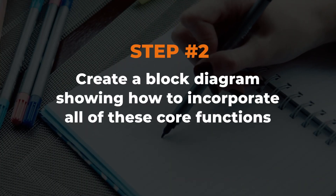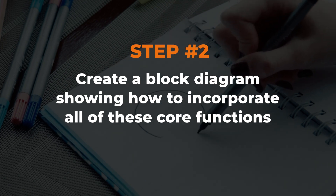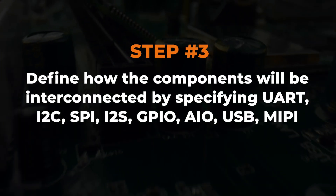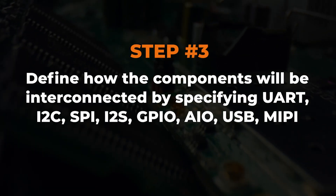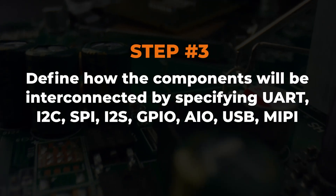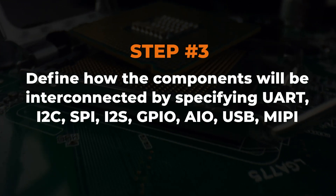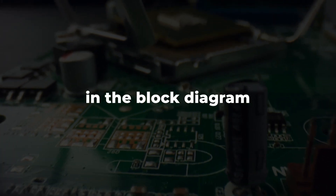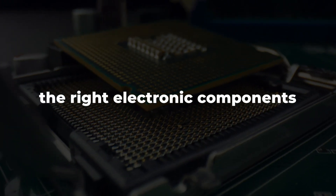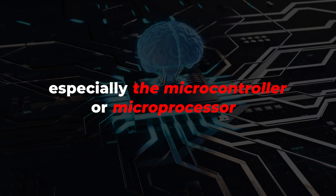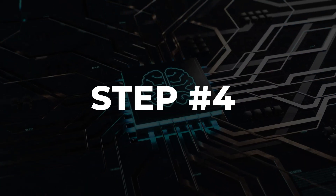Step two is to create a block diagram showing how to incorporate all of these core functions. Step three is to define how the components will be interconnected by specifying whether it's a UART, I2C, SPI, I2S, GPIO, or USB interface. Don't worry if you have no idea what some of these acronyms mean — just know that specifying them in the block diagram is critical to selecting the right electronic components, especially the microcontroller or microprocessor, which is the brains of your product.